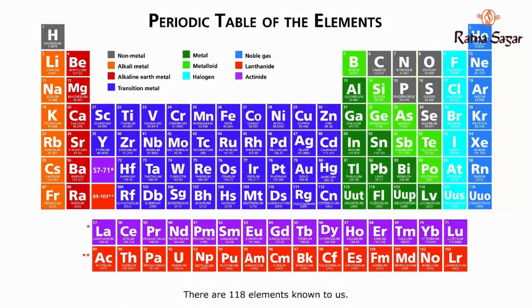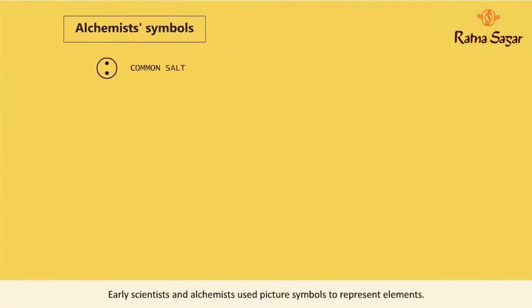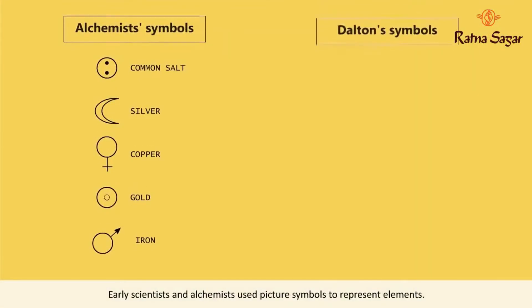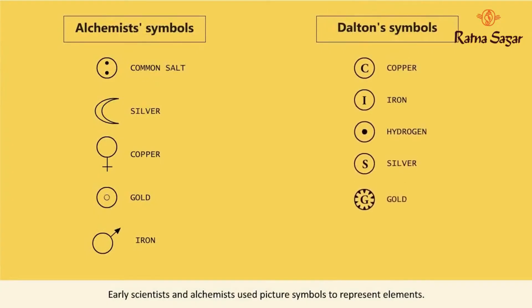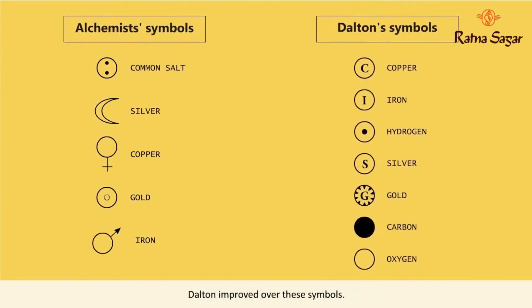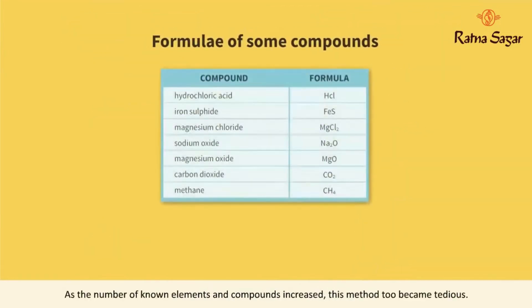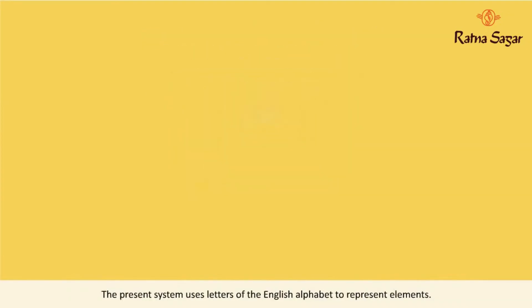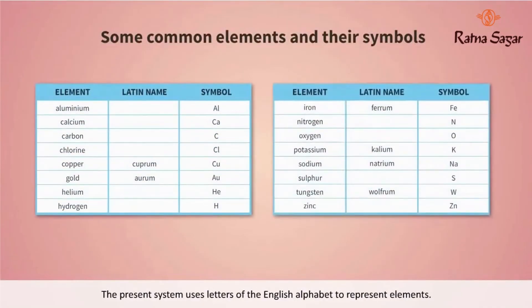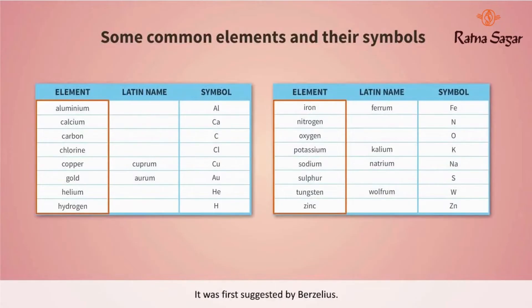There are 118 elements known to us. We use symbols to represent elements. Early scientists and alchemists used picture symbols to represent elements. As the number of known elements and compounds increased, this method became tedious. The present system uses letters of the English alphabet to represent elements, first suggested by Berzelius.